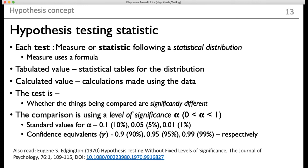Alpha is called the level of significance, and there is also something called the level of confidence, calculated as 1 minus alpha. When alpha is 10%, the level of confidence is 90%; when alpha is 5%, confidence is 95%; when alpha is 1%, confidence is 99%. However, it is not necessary that alpha needs to be fixed — a 1970 publication stated that hypothesis testing can be done without fixed levels of significance.